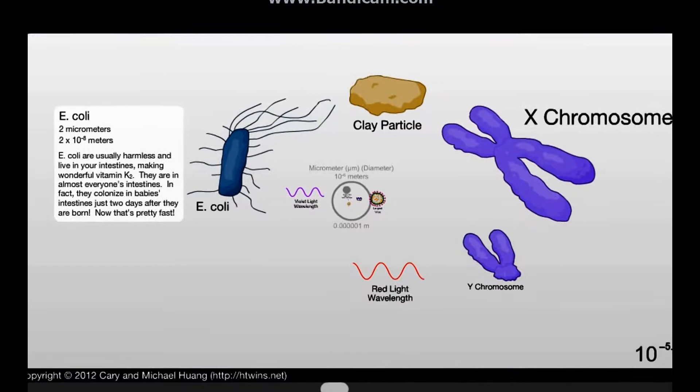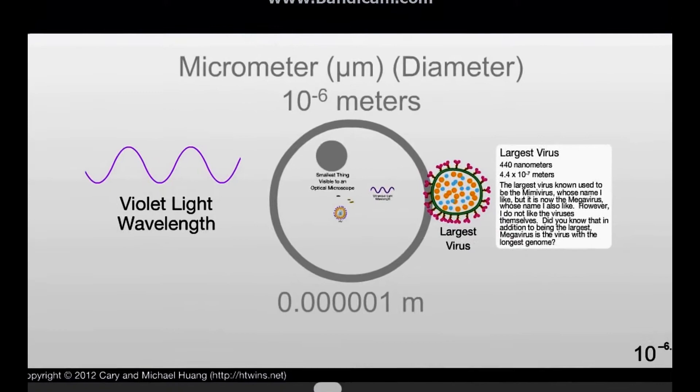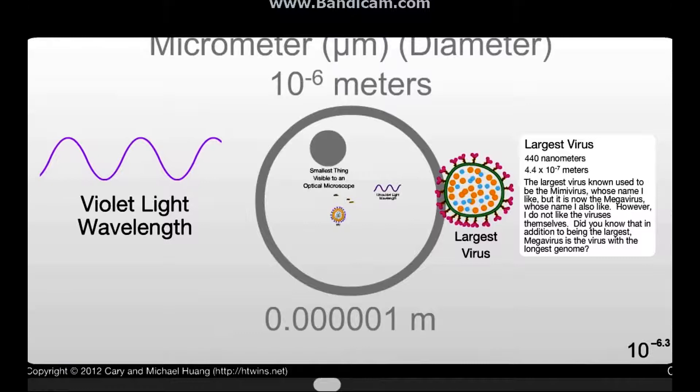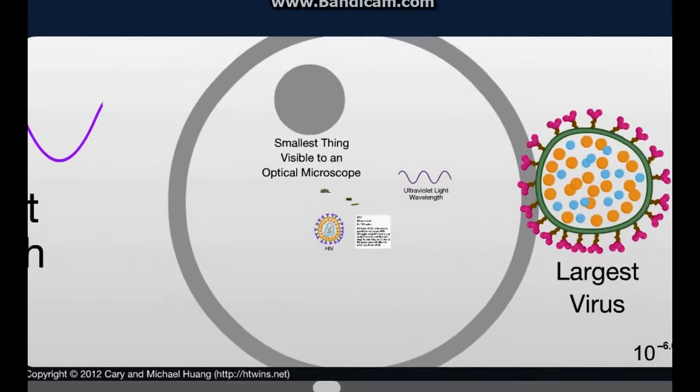E. coli. 2 micrometers. Wow. Then let's go all the way down here. Largest virus. That's huge for a virus. That is freaking big. It's about the same size as a violet wavelength. That's crazy.